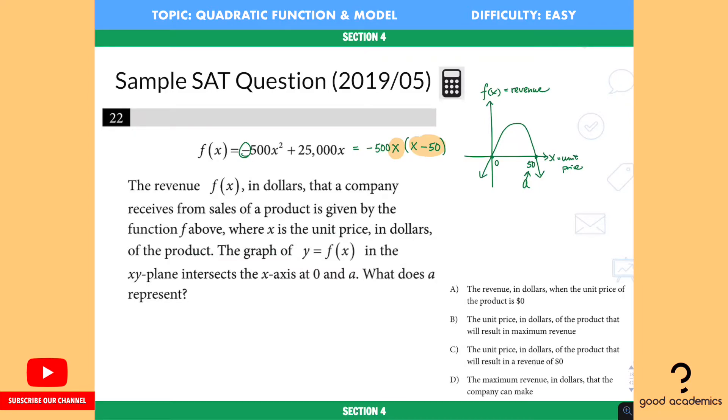All right, so which of the following choices on the right would fit perfectly? Let's go through the choices one by one. For choice A, it says the revenue in dollars when the unit price of the product is zero. Now that's not true because the unit price would be 50. So that's why we know A is not correct. The unit price in dollars of the products that will result in maximum revenue—well, maximum revenue is right here. This is the maximum revenue and that's not 50, that's 25, which is in the middle between zero and 50.